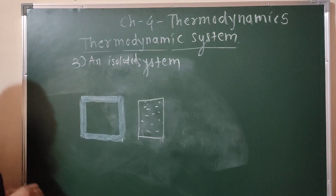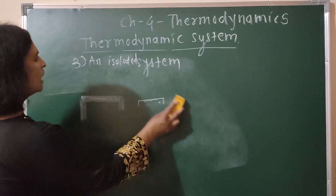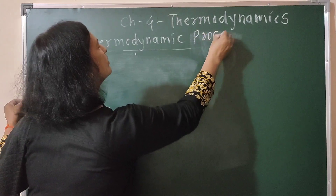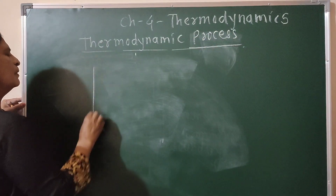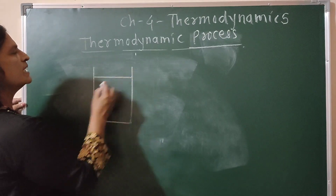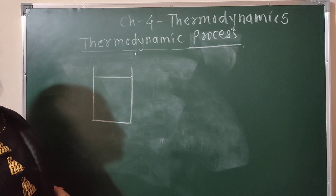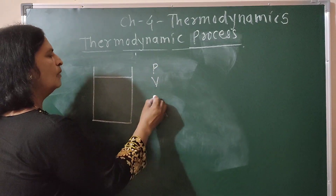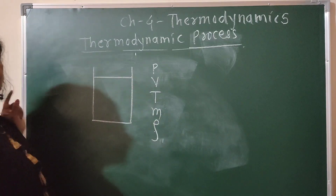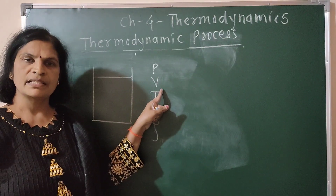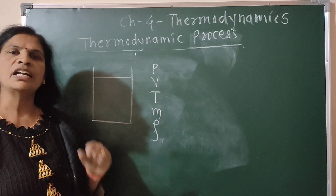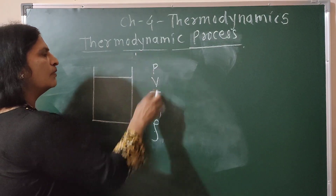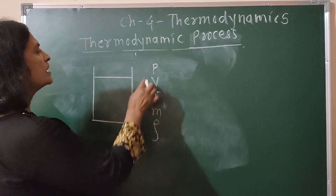These are the three different types of thermodynamic system. Now, thermodynamic process. Any thermodynamic system can be described with the help of five variables: pressure, volume, temperature, mass, and density. These are macroscopic variables because we can see and measure them, and therefore they are called thermodynamic variables, thermodynamic parameters, or state variables, because they describe the state of the system.